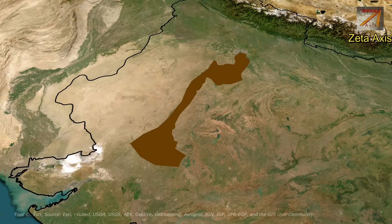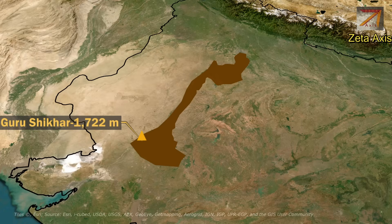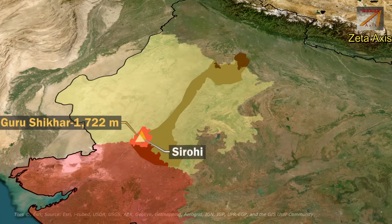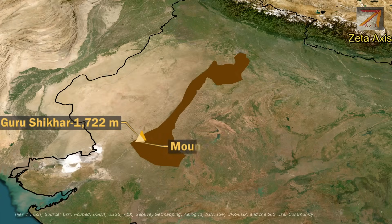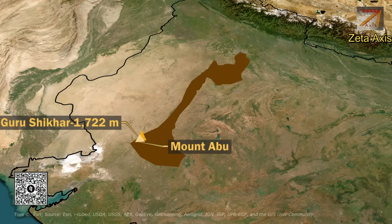The highest peak of the Aravalli hills is Gurusikhar Peak, which has an elevation of 1722 meters. The Gurusikhar Peak is located in Sirohi district of Rajasthan, very close to the Gujarat-Rajasthan border. Mount Abu is another important peak and hill station in the Aravalli range, located just south of Gurusikhar Peak.